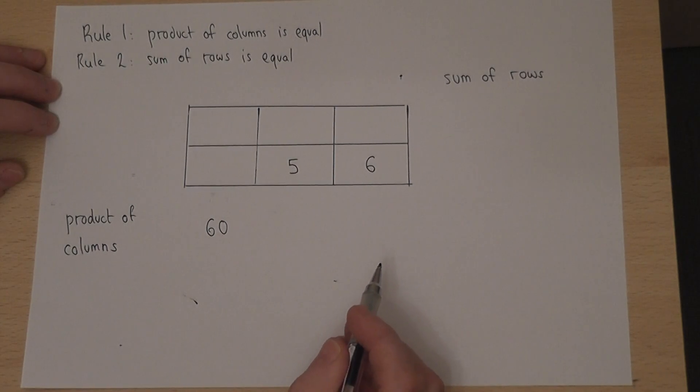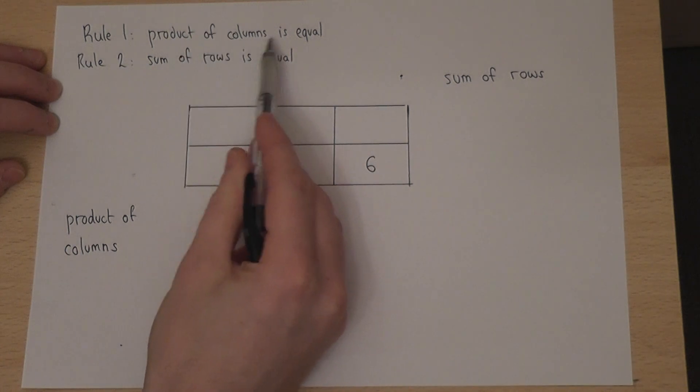This question just involves a little number problem. We're told that in this table the product of the columns is equal.